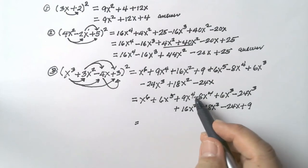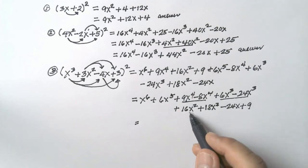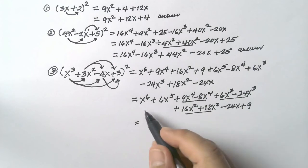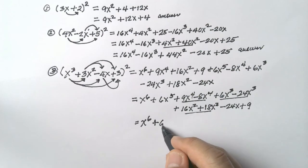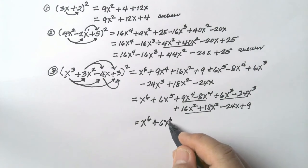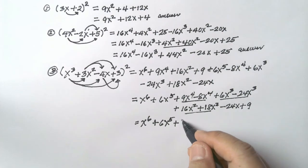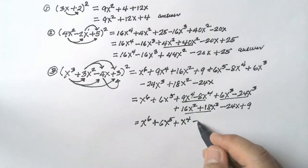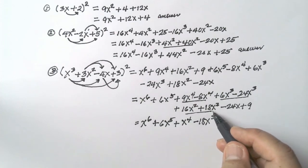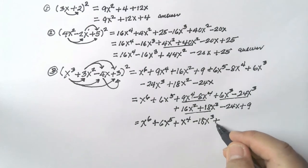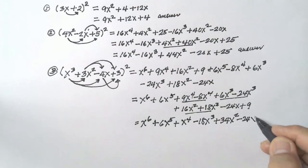Minus 24x plus 9. Check the exponents: 6, 5, 4, 4 — those are similar terms; 3, 3 — similar terms; 2, 2 — similar terms. Combine them: x to the 6th, plus 6x to the 5th, plus 9x to the 4th minus 8x to the 4th = x to the 4th. Then negative 6x cubed minus 12x cubed = negative 18x cubed. Positive 16x squared plus 18x squared = positive 34x squared, minus 24x plus 9.